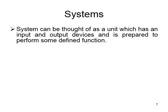Now let us go with certain definitions. What is the meaning of a system? A system can be thought of as a unit which has input and output devices and is prepared to perform a certain desired function. If there is an input and an output, and they combine to perform a particular function, then we call it a system.